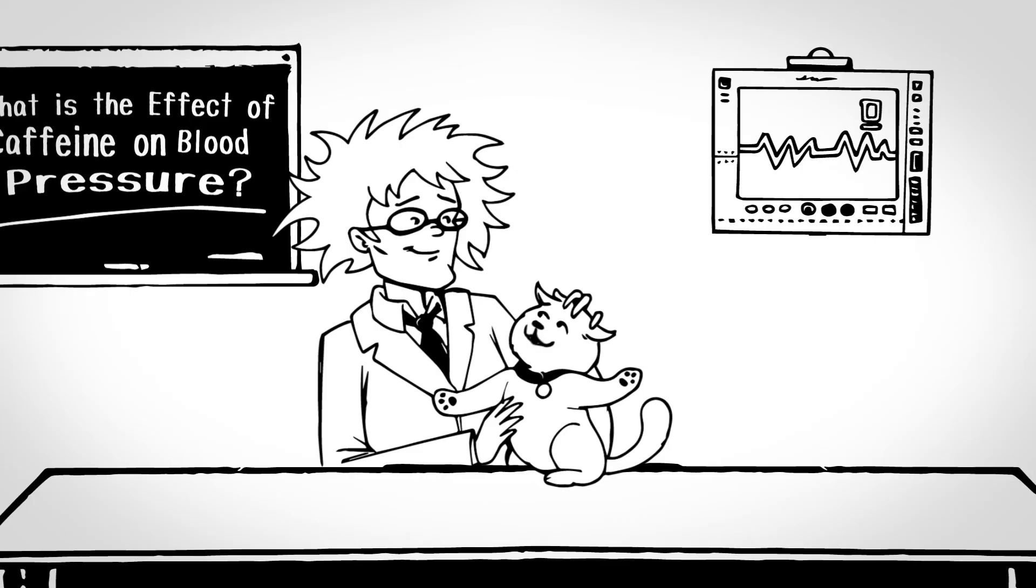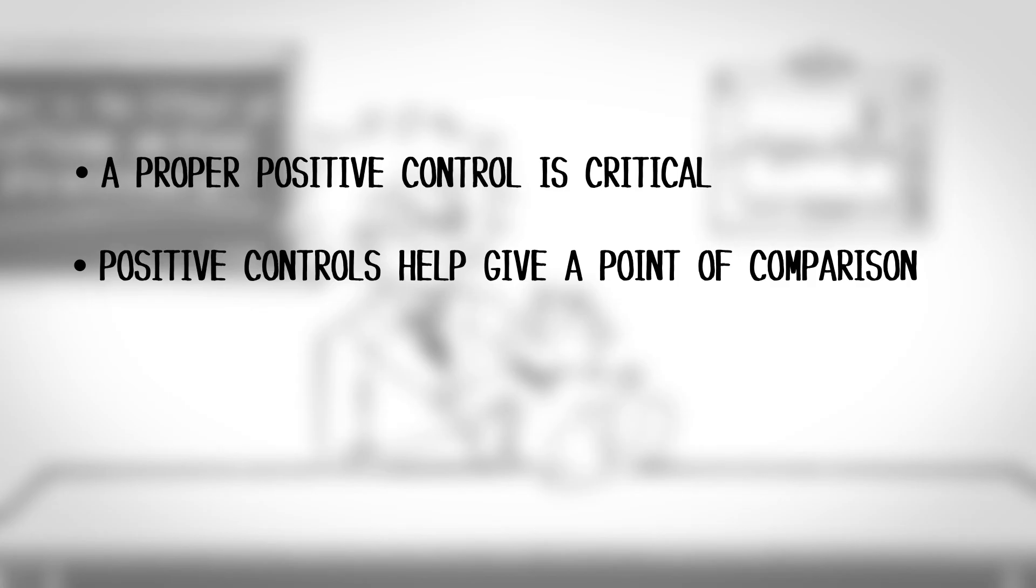You still have so much to learn. A proper positive control is critical to determine if the experimental system is operating when the experiment is done. Positive controls also help give a point of comparison for the agent under study. Without a positive control, if that agent has no effect, the scientist is left unsure as to whether the experiment worked.